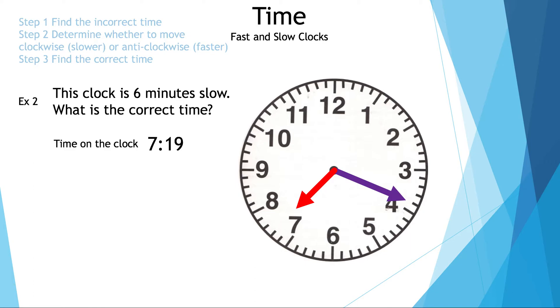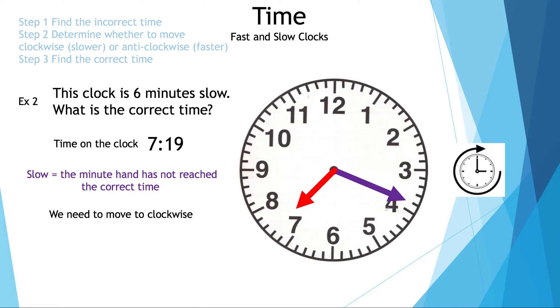Now let's talk about the vocabulary: slow means the minute hand has not reached the correct time. So we need to go forward, or clockwise, to get to the correct time.